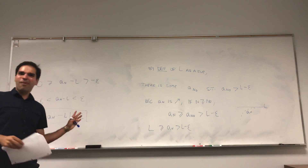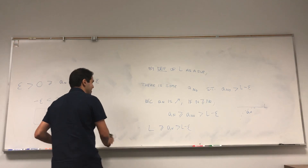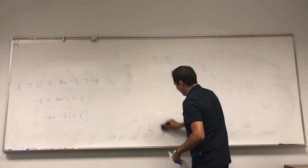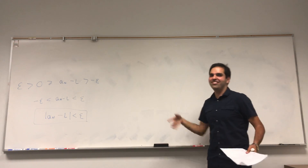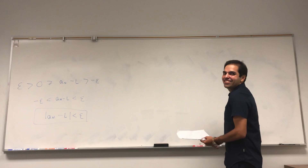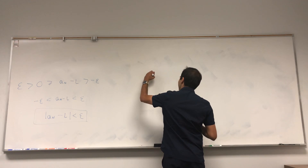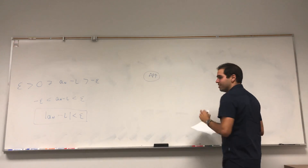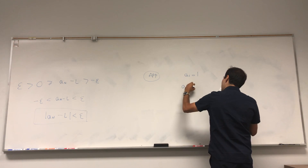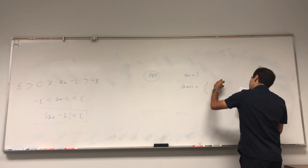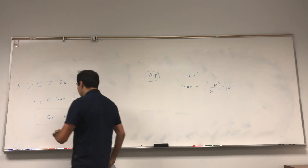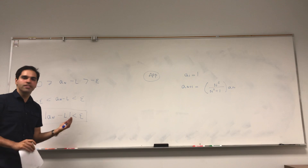That was the theory. Now let me give you a nice application, which was one of the questions on the Math 2B final last year. I told my students not to worry about it and it ended up being the last question on the exam — take my advice with a grain of salt. The application: suppose you have the sequence a_1 = 1 and a_{n+1} = (n²/(n²+1)) · a_n, a recursive sequence where the next term depends on the previous term.